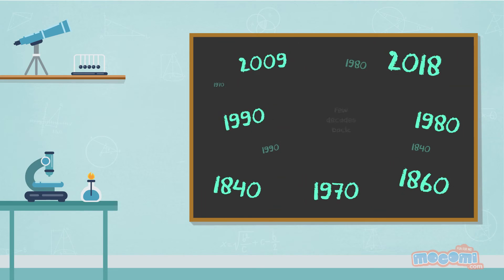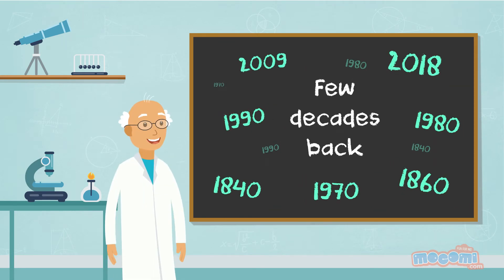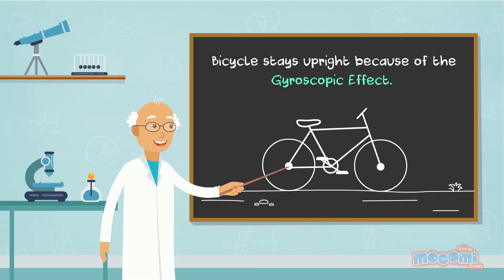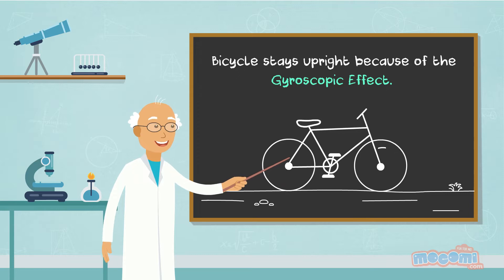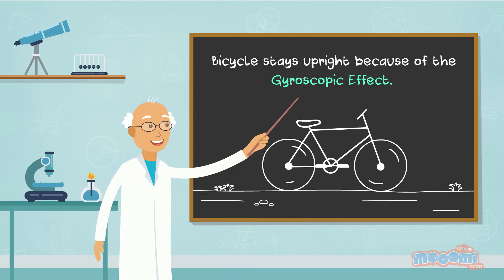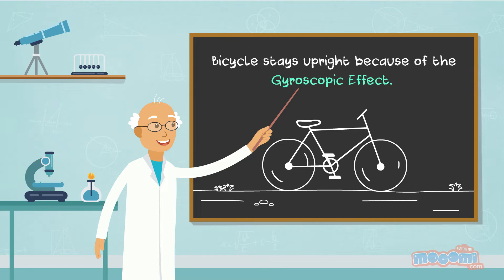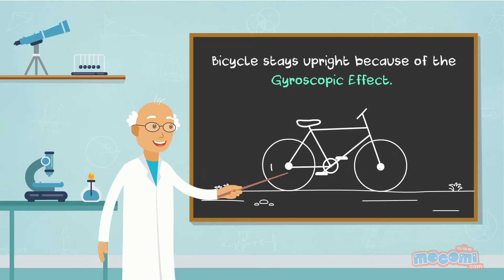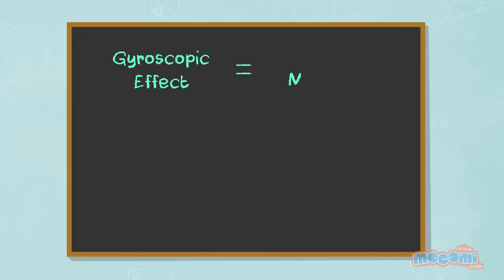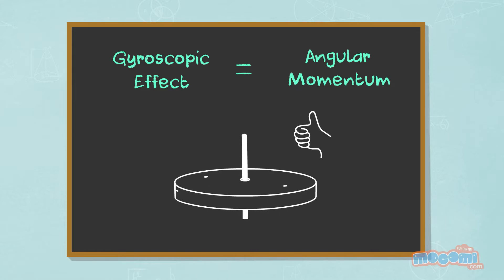Did you know that till a few decades back, scientists thought a bicycle stays upright because of the gyroscopic effect? The gyroscopic effect means that a spinning wheel tends to stay aligned in its original direction during momentum. This is known as angular momentum or spinning action.